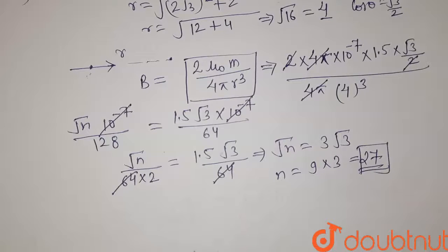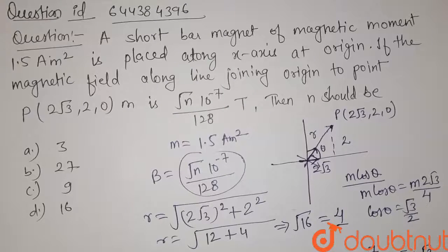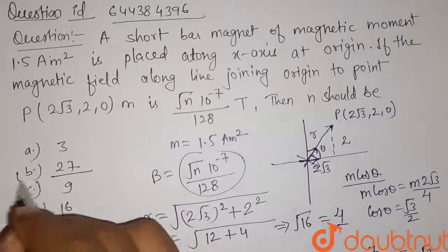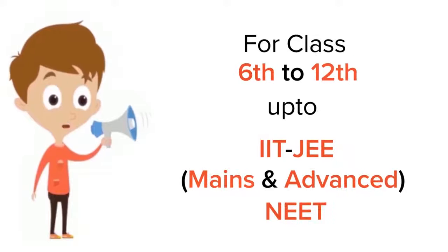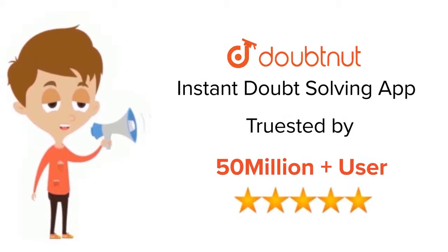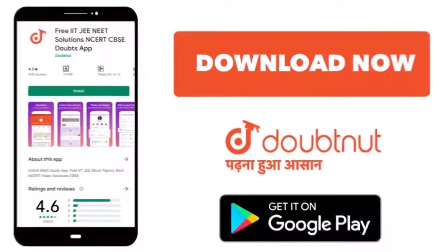Now let us check the options here. Here option b is 27, so this will be the right answer for this question. Thank you. For Class 6 to 12, IIT-JEE and NEET level, trusted by more than 5 crore students, download Doubtnut app today.